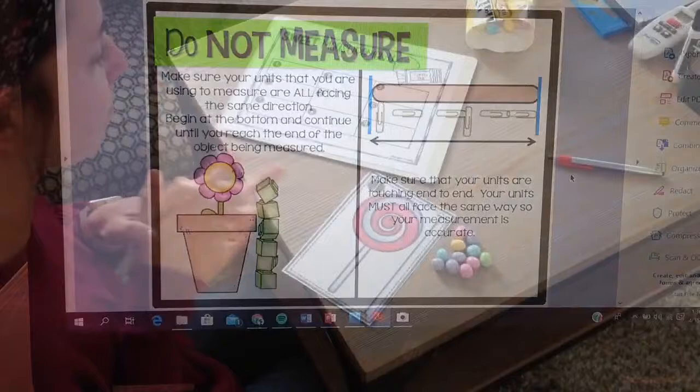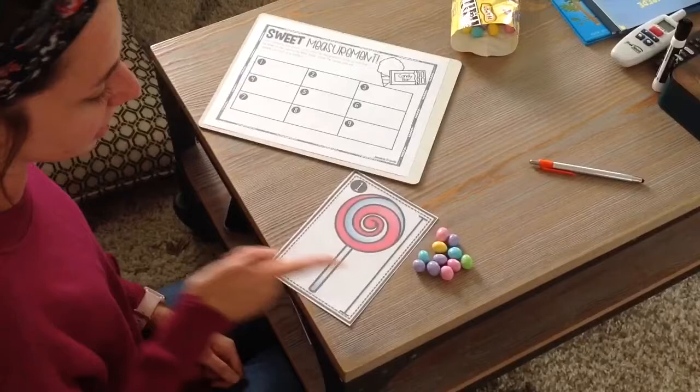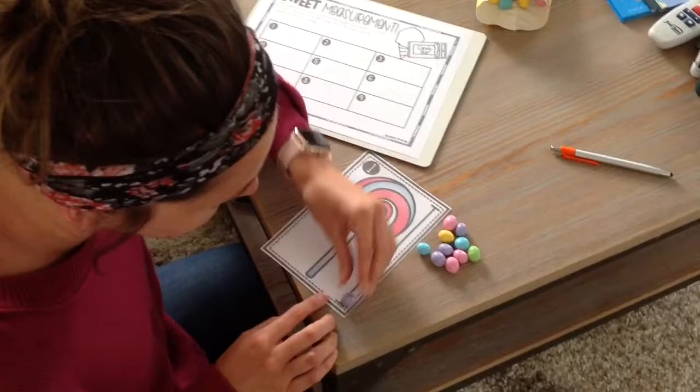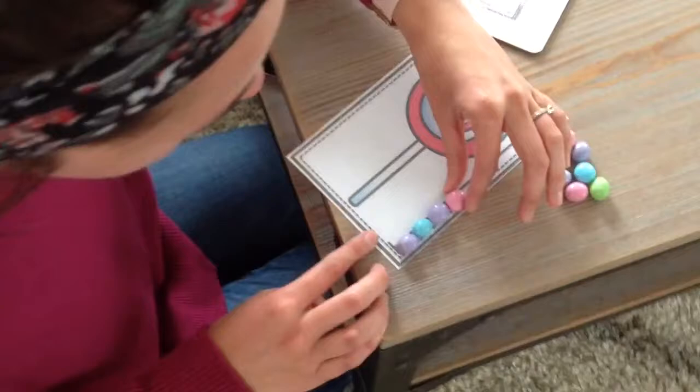Let's use some pictures of some sweet treats to practice how to measure something using non-standard measurement. So I went ahead and I chose my Easter M&Ms to measure and remember that we start from the bottom and work all the way to the top and we also have to make sure that our measurements are touching one another. So I'm going to start at the bottom and I'm making sure my M&Ms are touching.